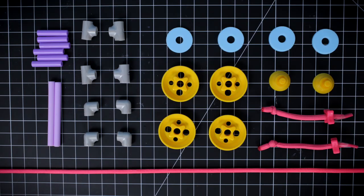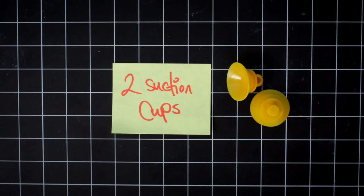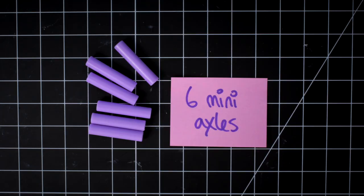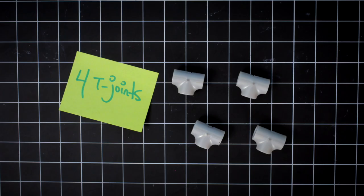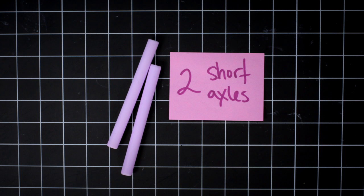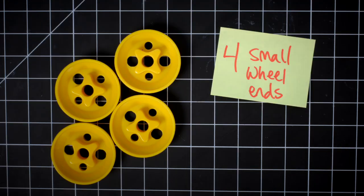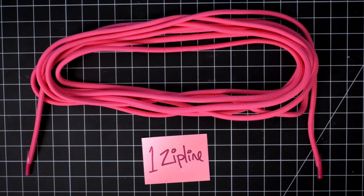Make sure you have everything. Two suction cups, four elbow joints, six mini axles, four washers, four T-joints, two short axles, four small wheel ends, two cord handles, and one zip line.